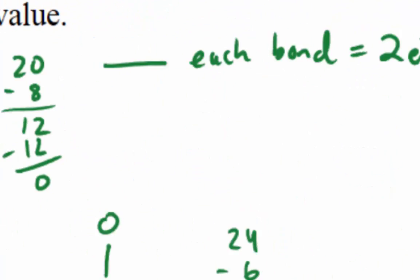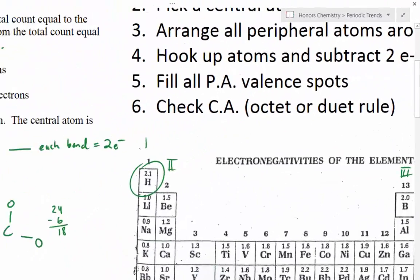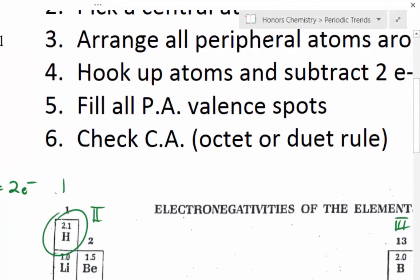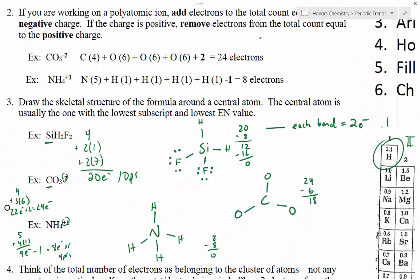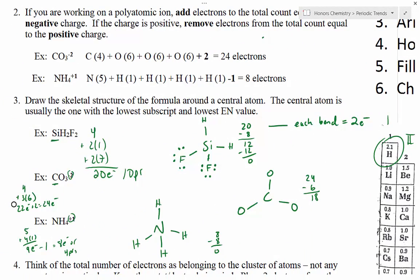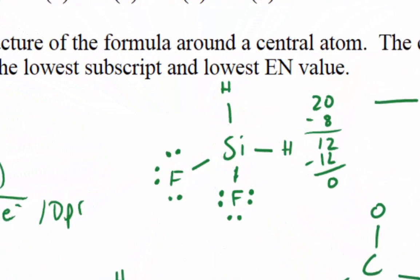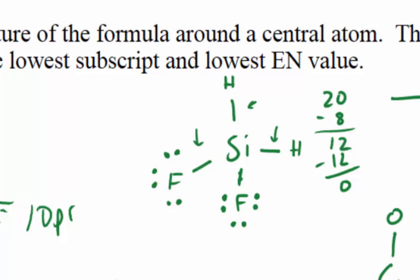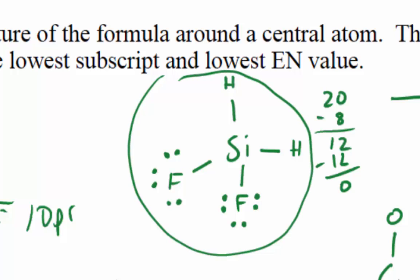Once I've filled my peripheral atoms' valence spots, we're going to check the central atom to make sure that it has an octet. Silicon has two, four, six, eight electrons in its outer shell, which means it has a full octet and it is happy. So this is going to be the Lewis Dot diagram for SiH2F2 — done.